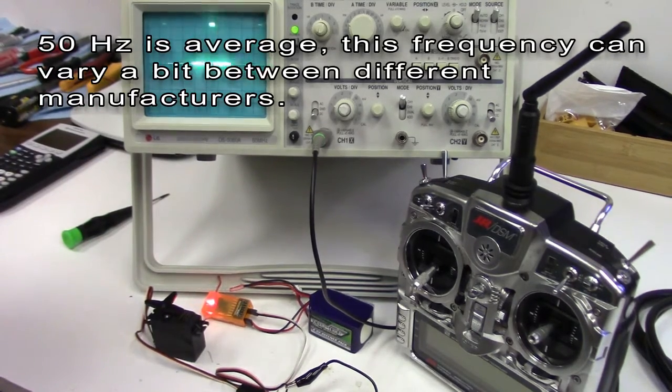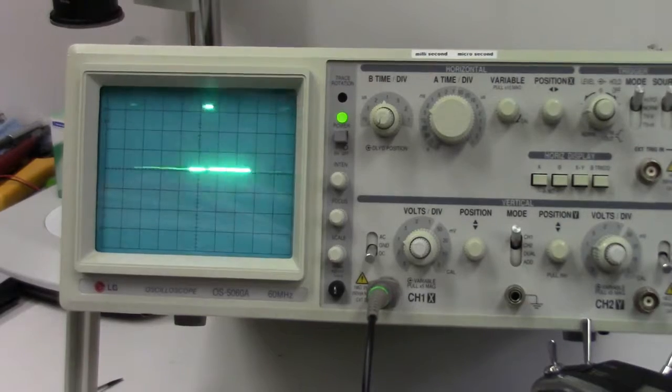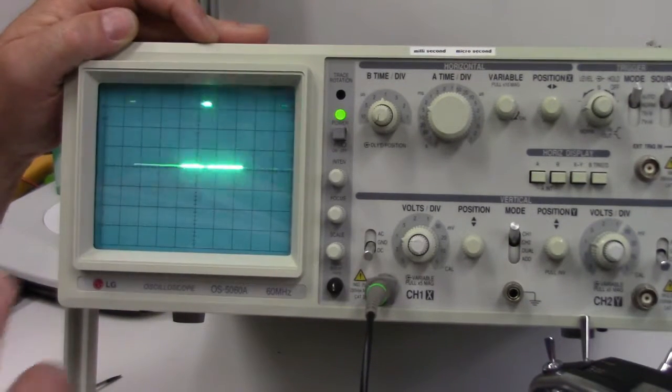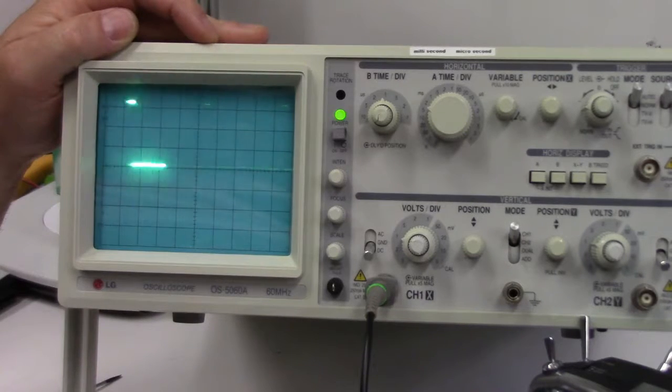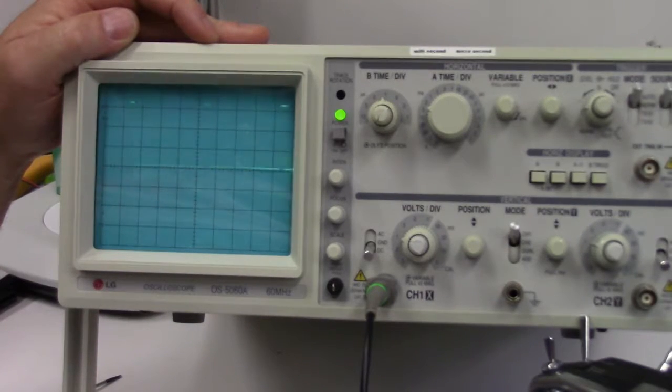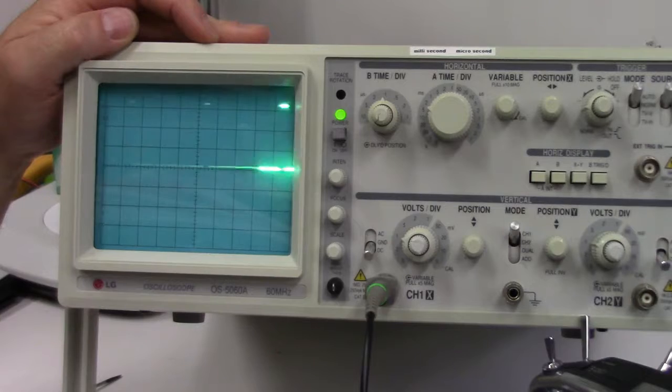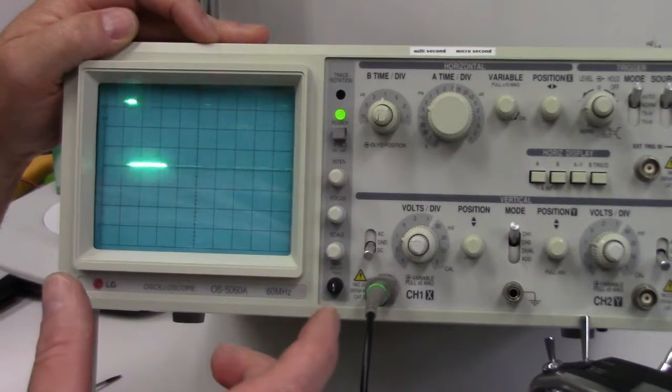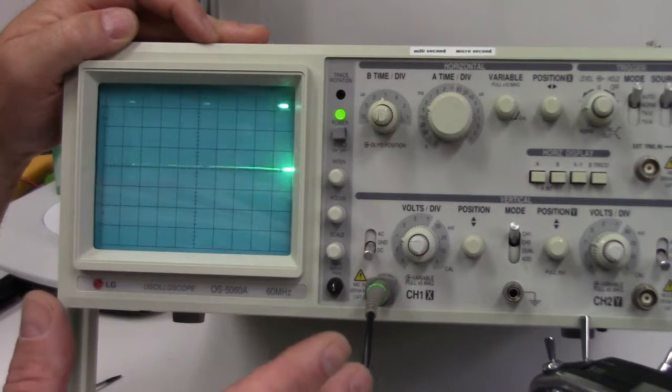So what I'm going to do, I'm just going to zoom into the scope here, so bear with me. So now that we're zoomed into the scope, what we're seeing here is the PWM signal, pulse width modulation, and the way it works is the shorter or wider the pulse dictates where the servo is going to be positioned.